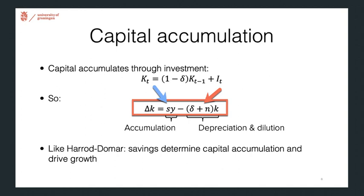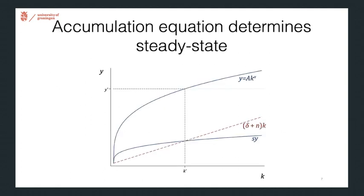The similarity to Harrod-Domar is here that the savings determine capital accumulation and thus drive growth. But thanks to diminishing returns to capital, so here in this figure we plot the production function from before. But added to that is first the savings curve, which shows how much savings are available, and second, the depreciation and dilution term from before. So in periods where savings are higher than this depreciation and dilution, we will see an increase in capital per person. And that will happen in this part of the graph.